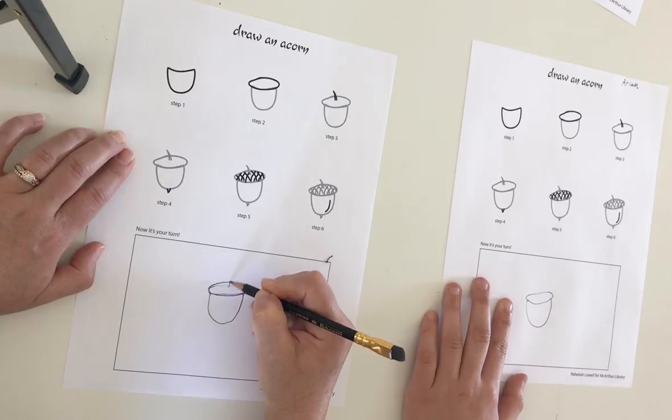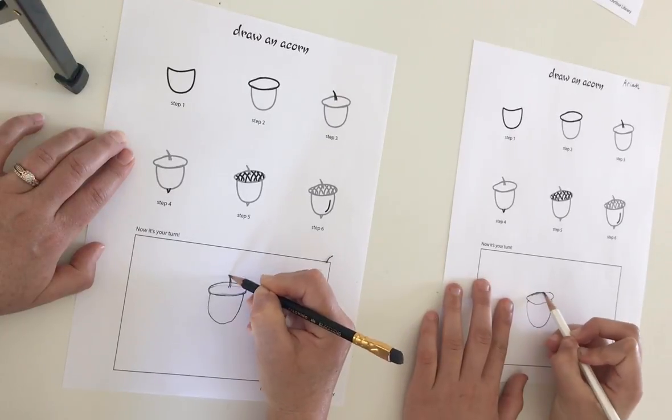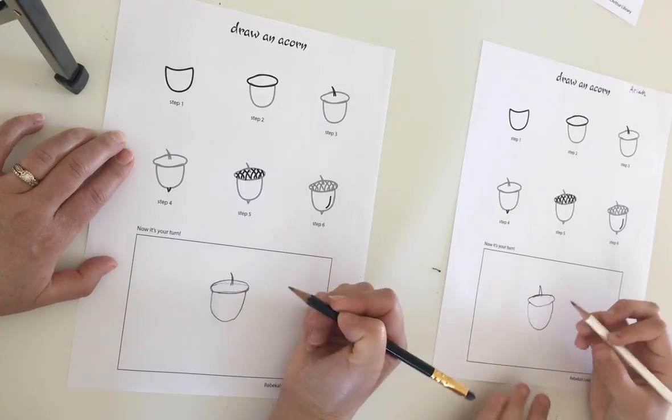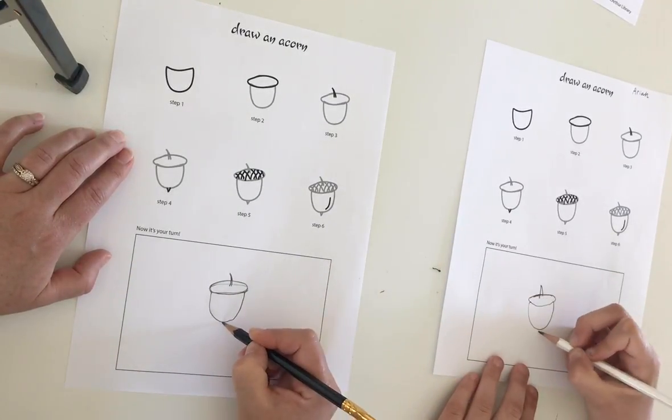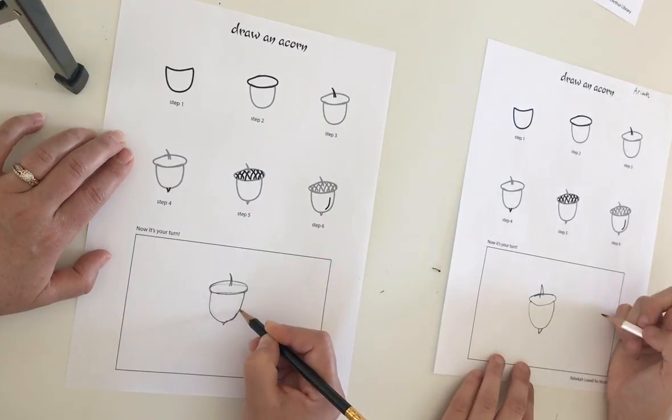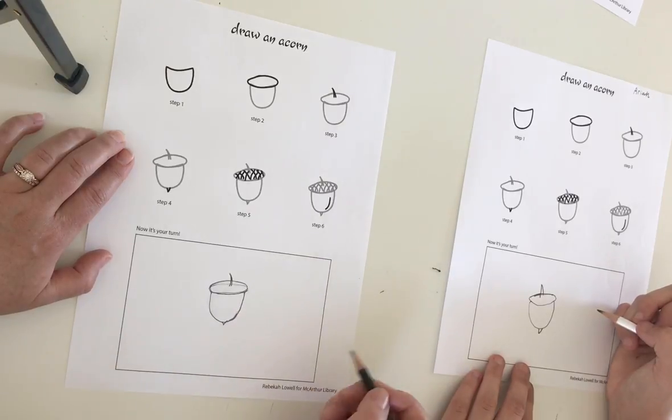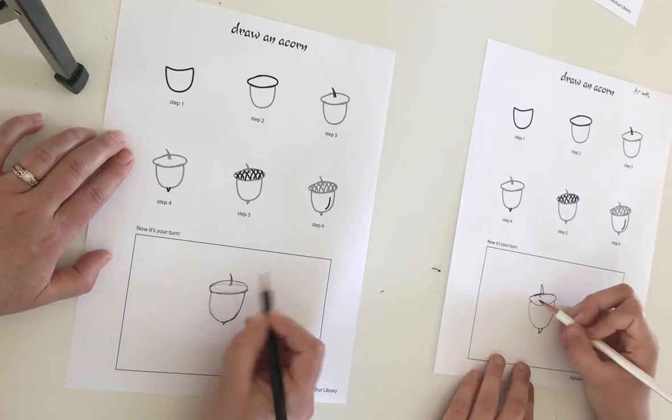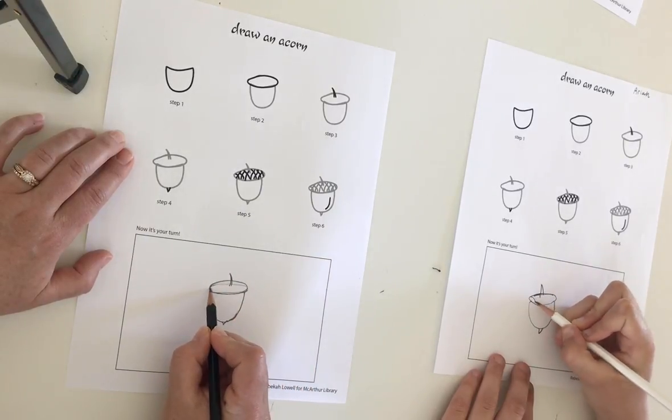Then step three is your stem. It kind of looks like a tail but upside down. And then step four is like that little pointy sharp part at the bottom of acorns. I like to add it because it's a nice detail.